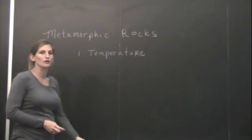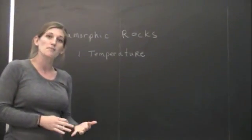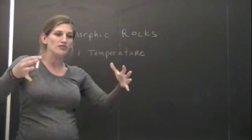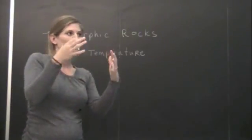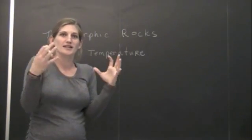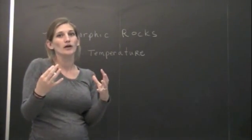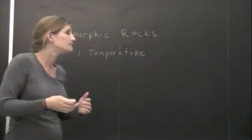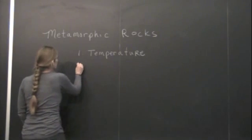Another place we see increases in temperature is around magmatic sources. If we have a blob of magma that's risen up through the crust and it's now sitting inside of the crust, it's very, very hot, it's going to start to metamorphose the rocks directly around it. So two things to look at for temperature.